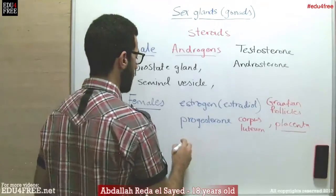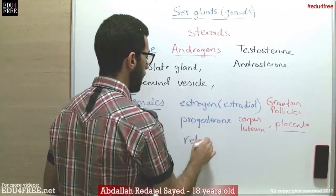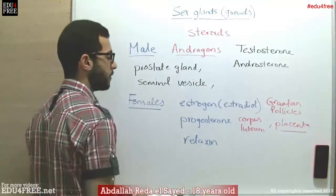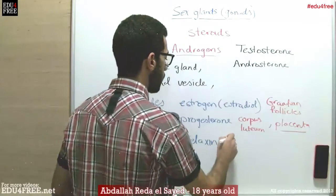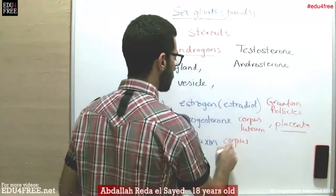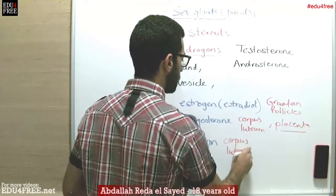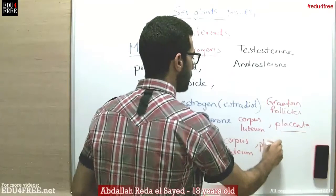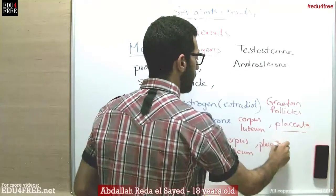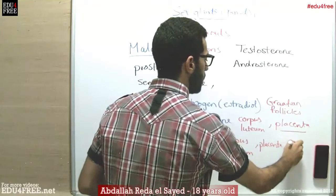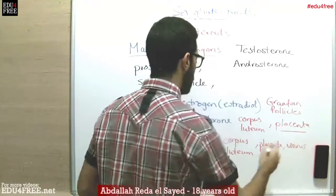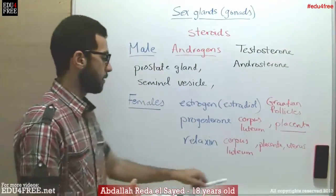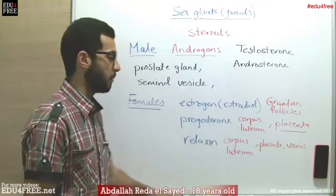Also we have relaxin, and this hormone is produced from the corpus luteum, the placenta, and the uterus. It helps in the relaxation of the walls of the uterus throughout the process of labor, in order to facilitate the delivery of the baby.